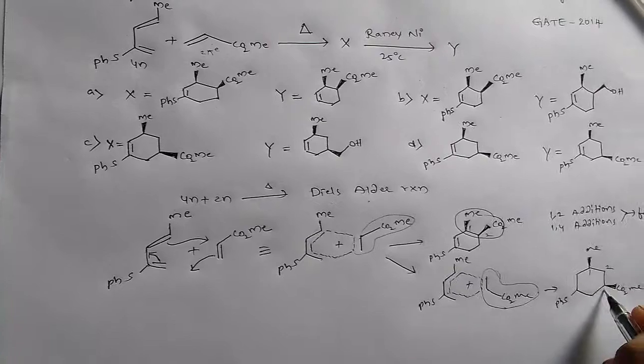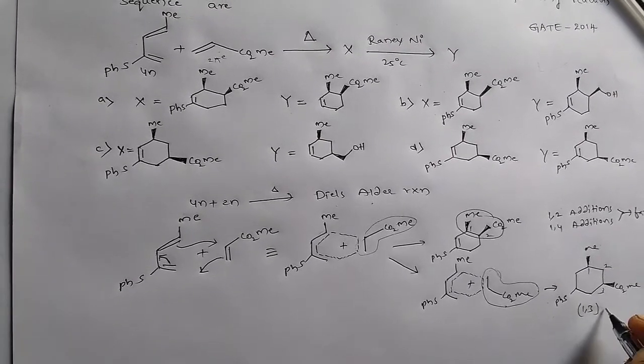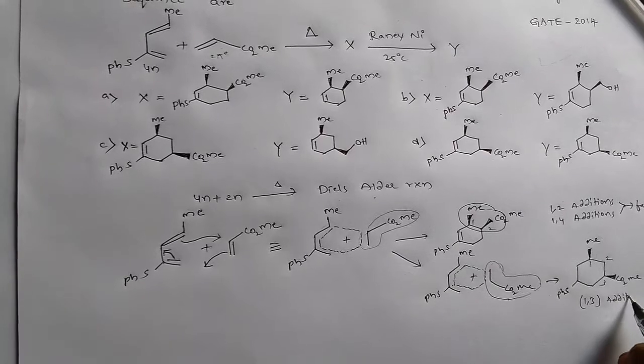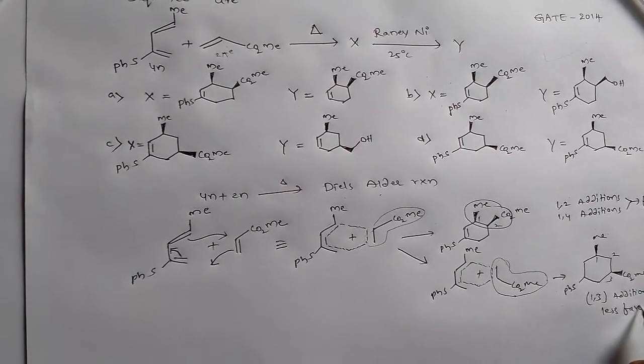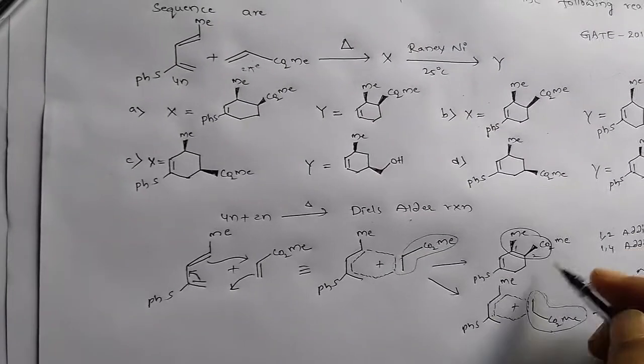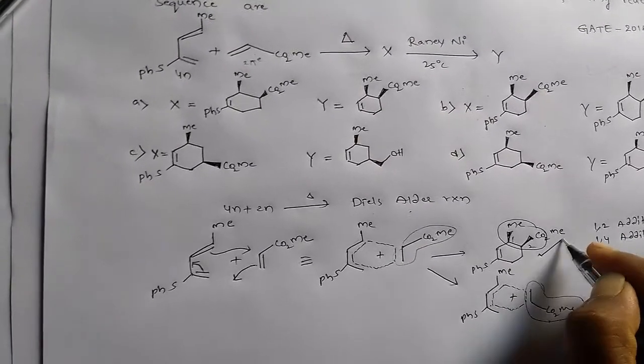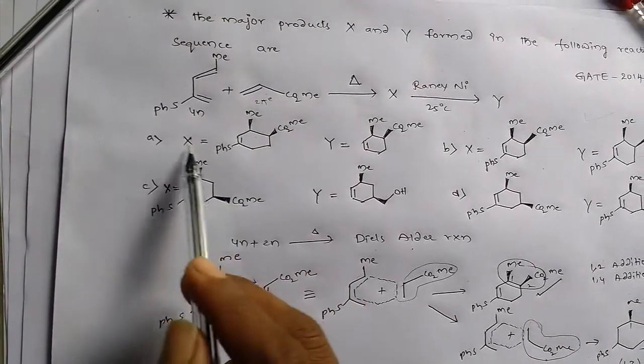This is 1,3 product, so 1,3 additions are not favored. So our product, our X, is this one. We got this one. X is equal to this, so we have two options like A and B.